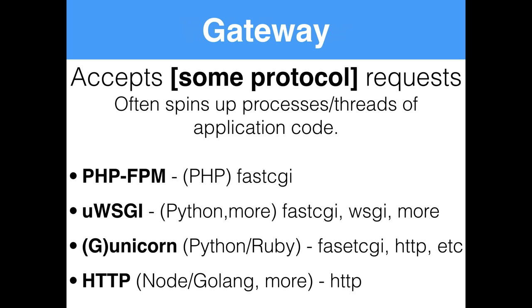Some programming languages don't really need a gateway because they can speak HTTP natively. Node.js and Golang are two big examples — they can listen for HTTP requests themselves. With those, you don't technically even need a web server like Nginx or Apache in the middle, but typically you see them in front anyway so they can do things like set cache headers or serve static files — things you don't necessarily want your Node.js or Golang code to do.